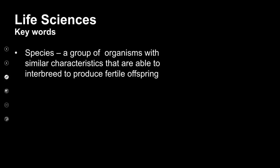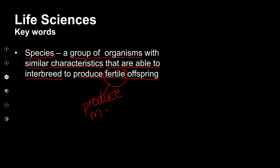A species is a group of organisms — plants or animals — that have similar characteristics. There would be some kind of relatedness, and they are able to interbreed. That's important. They would then produce fertile offspring, and fertile means that those offspring will be able to produce more offspring. So in other words, they can continue the species. It's a group of organisms with similar characteristics that, when they interbreed, produce fertile offspring.